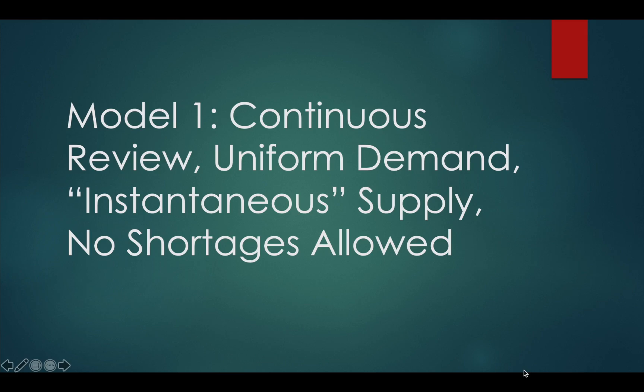The first model we will be talking about assumes the following. First, it is continuous review, meaning demand happens at any point in time. Second, we have uniform demand. Third, we have instantaneous supply — parameter B, the supply rate, is actually infinity, meaning no matter how big or small your order is, your supplier is able to give it right away. And finally, we assume that shortages are not allowed.